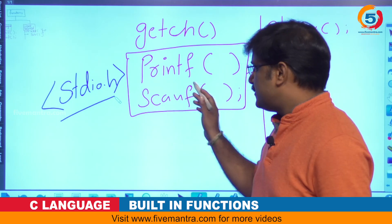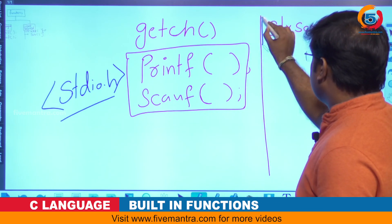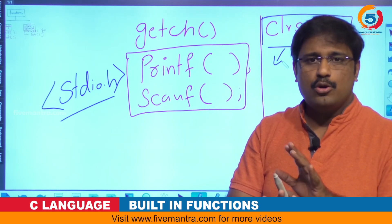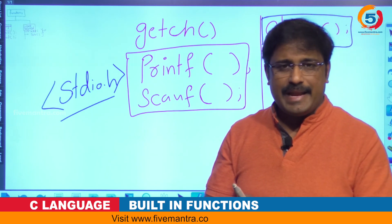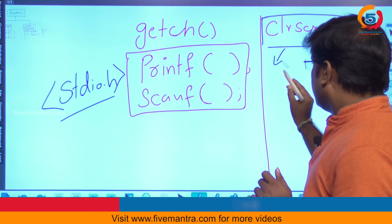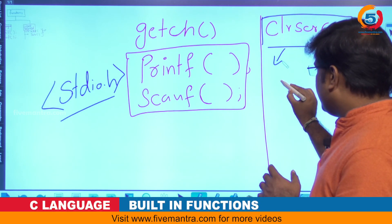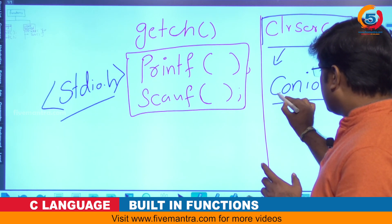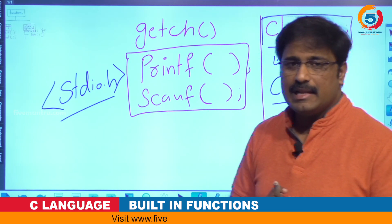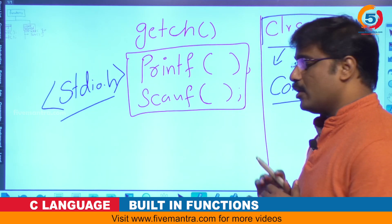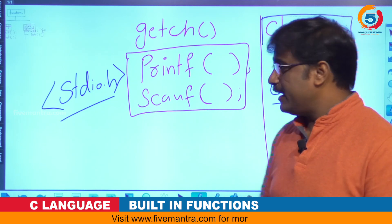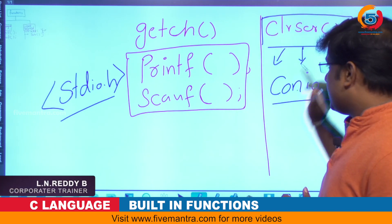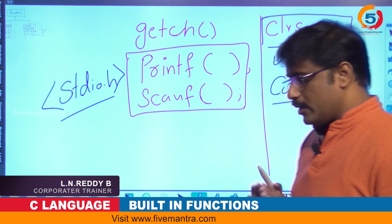What about clrscr? clrscr is a function used to clear the screen — the output screen. We call it the console. This function is available in conio.h. That is, the clrscr function definition is available in conio.h, which is the header file for it. It will clear the screen. Whenever you want to use clear screen, you have to include conio.h.